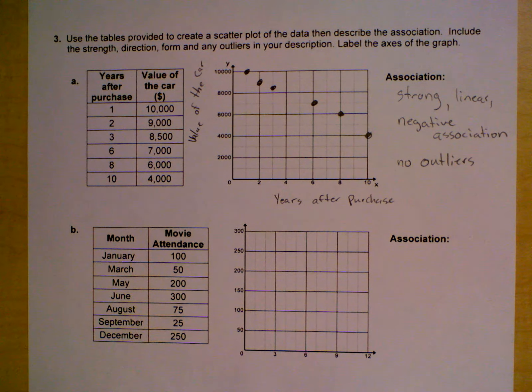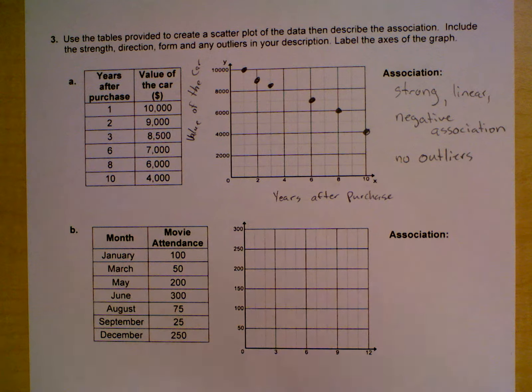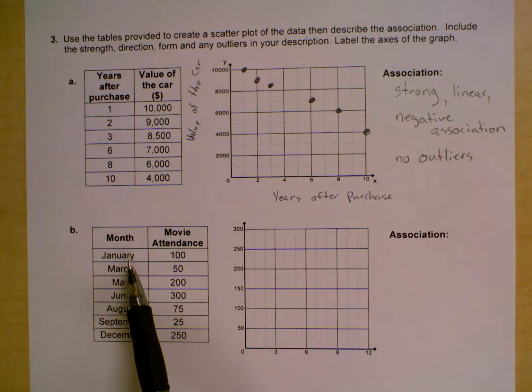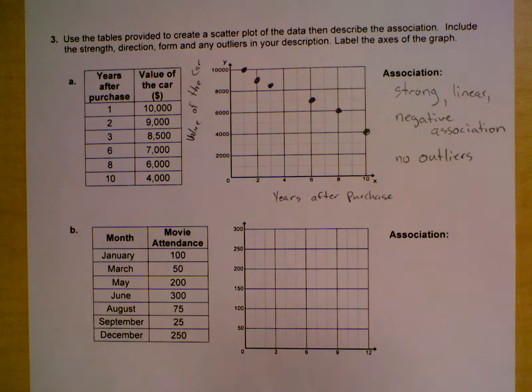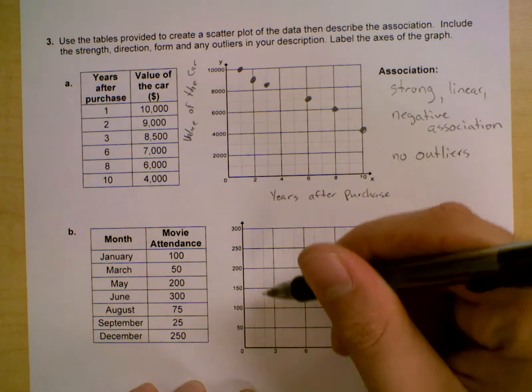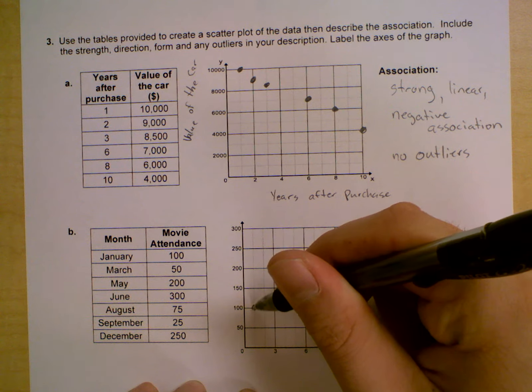Question B, we're going to do the same thing. Once again, I'm going to pause the video, label the axes, and plot the points. Before I do that, though, I just want to say that January is obviously the first month of the year, so when we plot that first point, we're going to plot one comma one hundred.